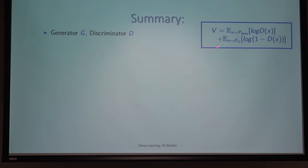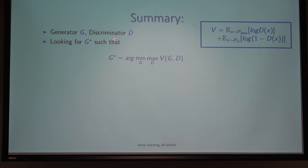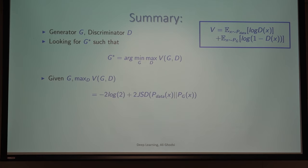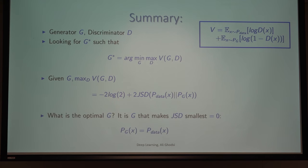Summary: the GAN objective is a min-max function over G and D. Given G, the optimal D leads to an objective equal to −2 log 2 (i.e., −log 4) plus two times the Jensen-Shannon divergence between p_data and p_G.